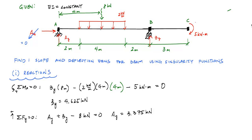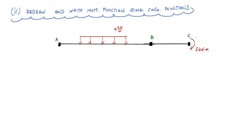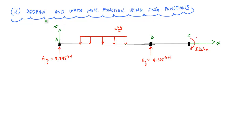Next, I redraw the structure and describe the moment function for the entire length of the beam using singularity functions. I don't draw the supports — I replace them with the forces: AY equals 3.375 kilonewtons and BY equals 4.625 kilonewtons. Point A represents x equals 0, which is my origin. The upward axis represents deflection v. The key load positions are: distributed load starts at x equals 2 meters, ends at x equals 6 meters, support B is at x equals 8 meters, and point C is at x equals 11 meters.